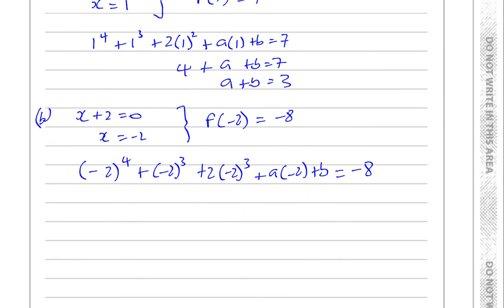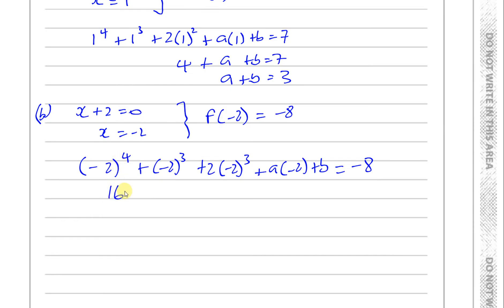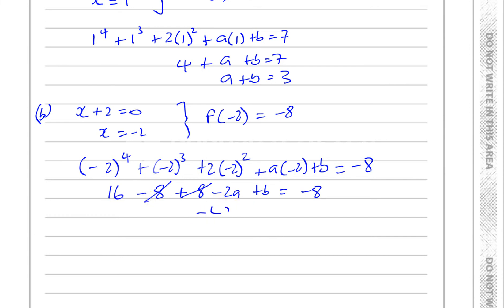Minus 2 to the power of 4 is positive 16, and minus 2 to the power of 3 is negative 8. When you raise a negative number to an even power, it becomes positive; when you raise to an odd power, it stays negative. Then 2 times minus 2 squared — that's 2 times 4 — gives positive 8. So we have 16 minus 8 plus 8 minus 2a plus b equals minus 8. These simplify to 16, leaving minus 2a plus b equals minus 8 minus 16, which is minus 24.